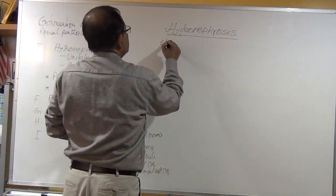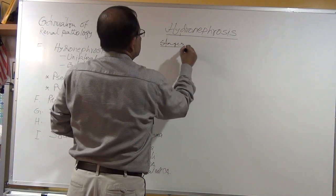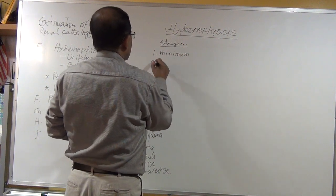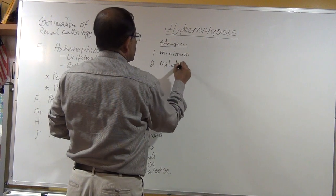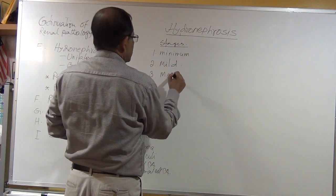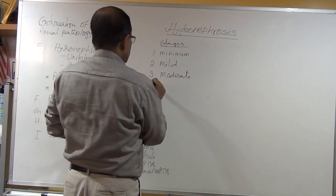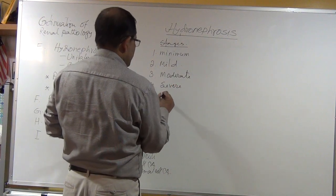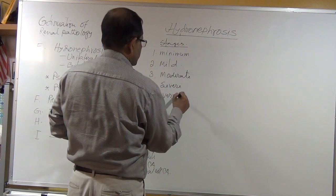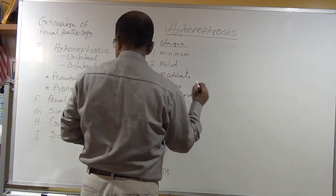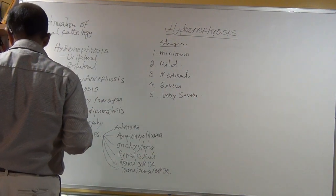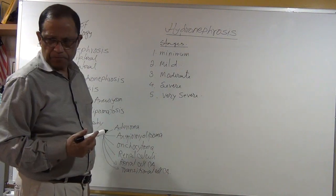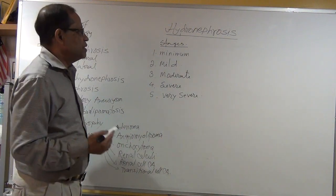The stages of hydronephrosis are: minimal, mild, moderate, severe, and very severe. Minimal means it is present but negligible.